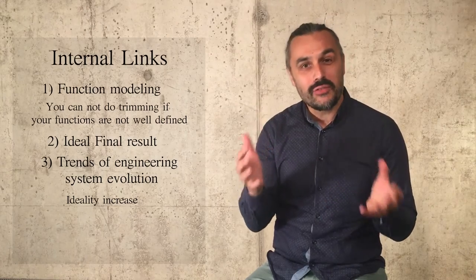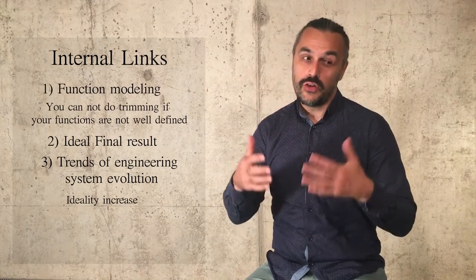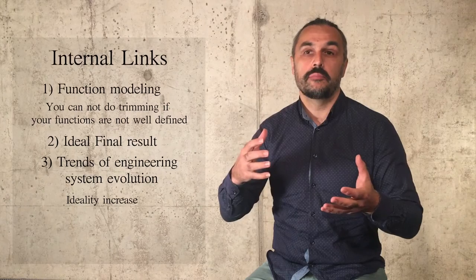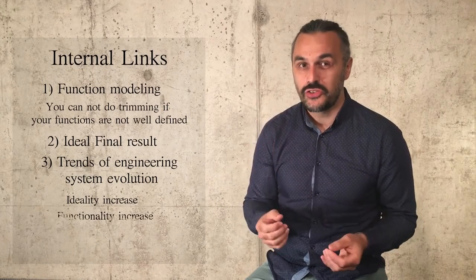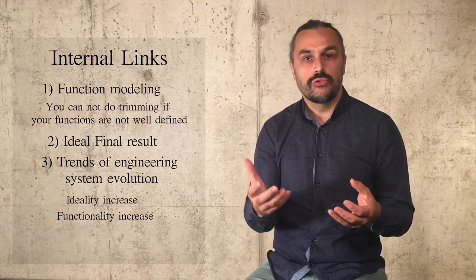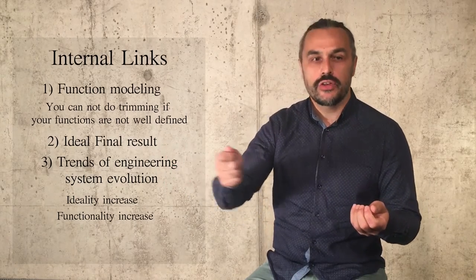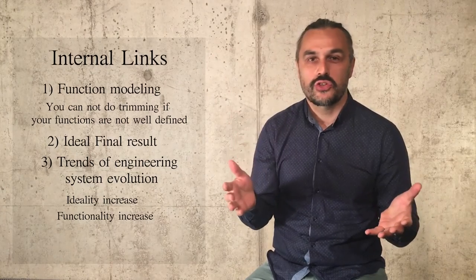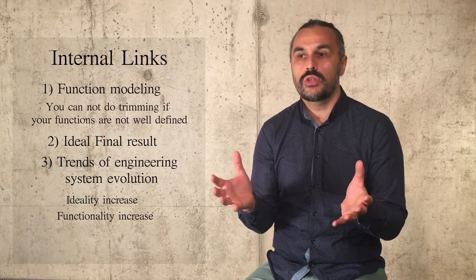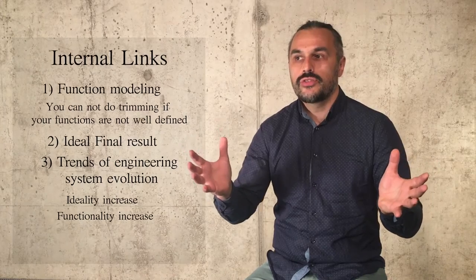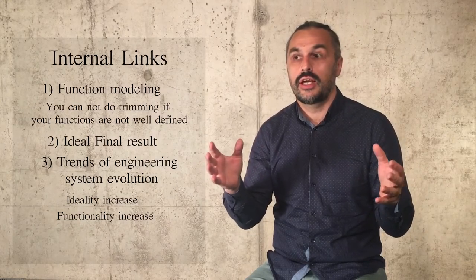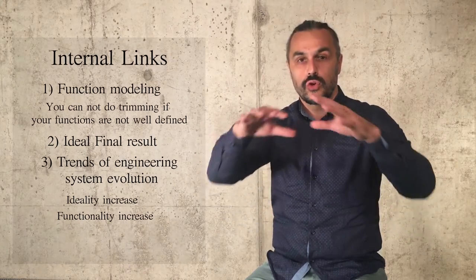Once we have trimmed everything, the system doesn't exist. But if the function is still performed, then it is ideal. We could also find links to the trend of functionality increase. The system has a natural way to evolve, acquiring more and more functions — it becomes a kind of Frankenstein. Trimming is a natural stage in system evolution when functions go through a convolution — for example, if two subsystems both have cooling fans, one cooling fan could be trimmed.